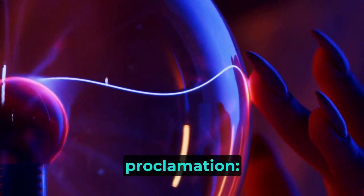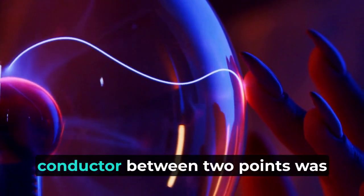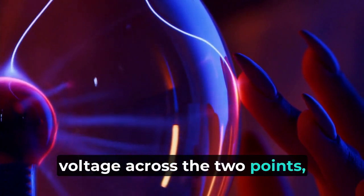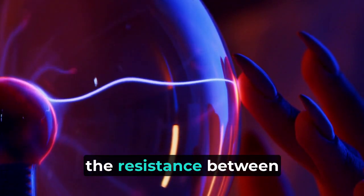It was a revolutionary proclamation: the current flowing through a conductor between two points was directly proportional to the voltage across the two points, and inversely proportional to the resistance between them.